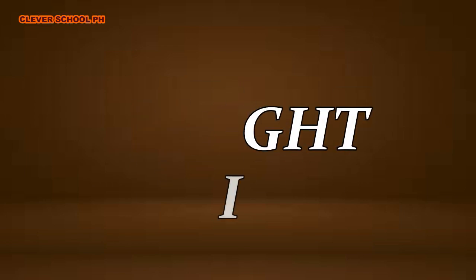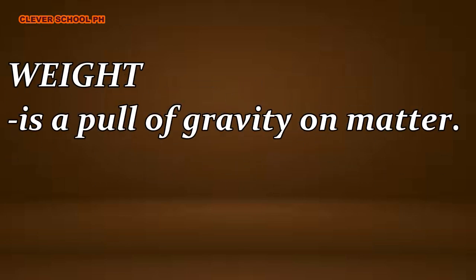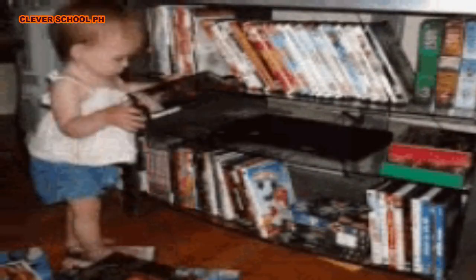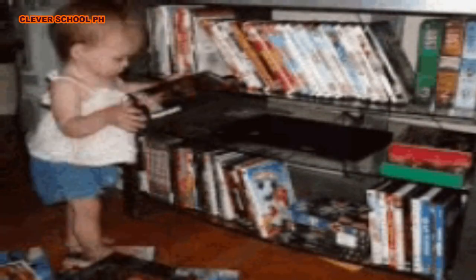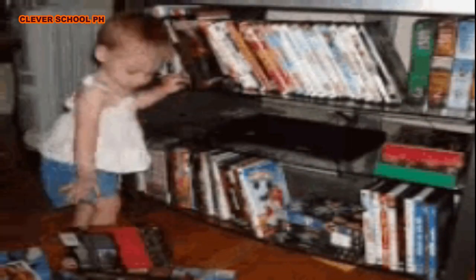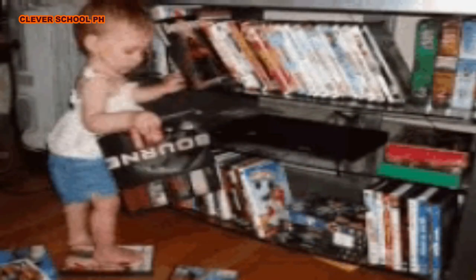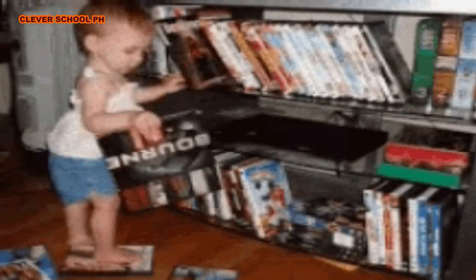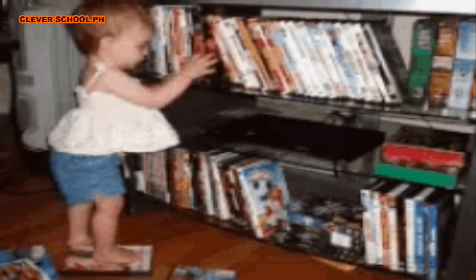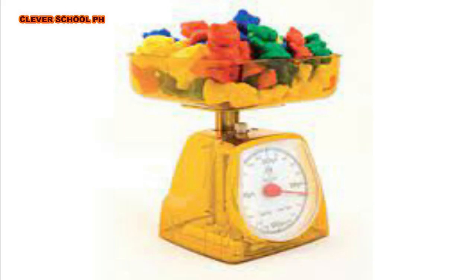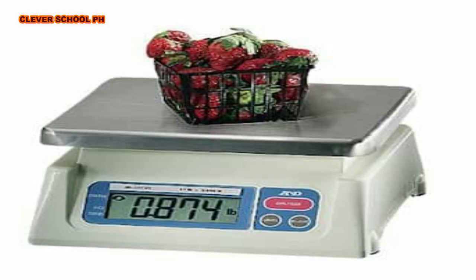Weight is the pull of gravity on matter. If you drop a book, it will fall to the floor. Why? The book falls toward the floor because Earth pulls all objects toward it. When you weigh an object, you are really measuring the pull of gravity on that object. Gravity controls the weight of an object.